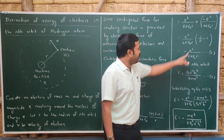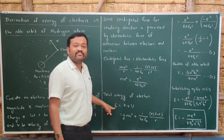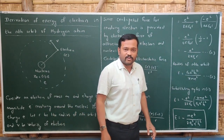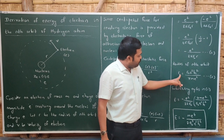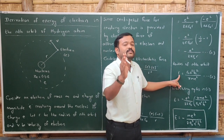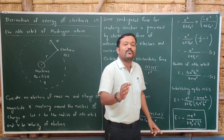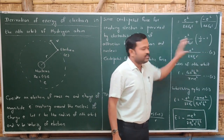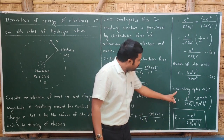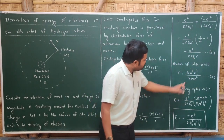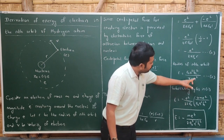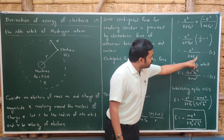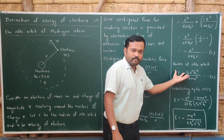We have already derived the expression for the radius of the nth orbit. Let us substitute it into equation one. The radius of the nth orbit of the hydrogen atom is r = ε₀n²h²/(πme²). Substituting equation two into equation one, we place ε₀n²h²/(πme²) into the energy expression: E = -e²/(8πε₀) times the reciprocal of r.